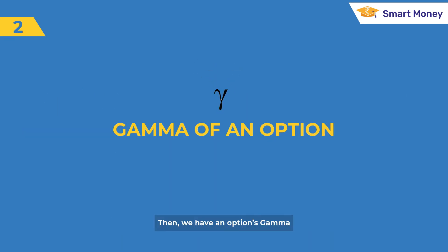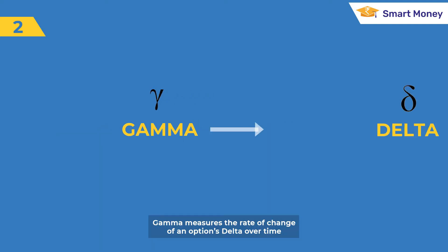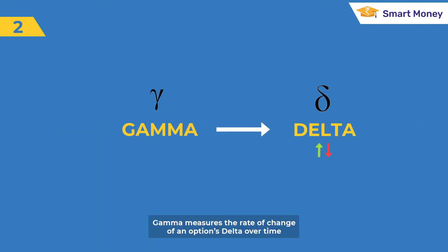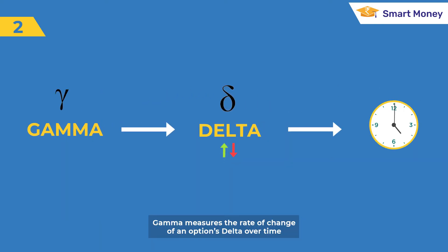Then we have an options Gamma. Gamma measures the rate of change of an options Delta over time.